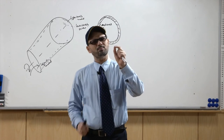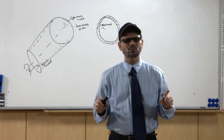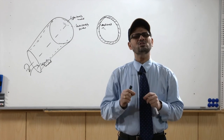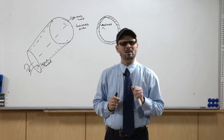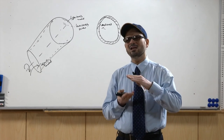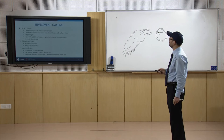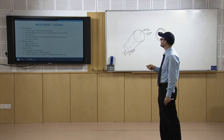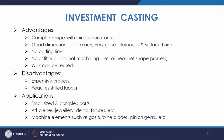The wax must provide good tensile strength, good hardness, and minimum residue — loss on ignition should be minimum and ash content should be minimum, otherwise it will stick to the inner surface. Advantages include: ability to cast complex shapes, good dimensional accuracy, close tolerance finish, no parting line, it is a near-net-shape process, and the wax can be reused. The disadvantage is that it is an expensive process requiring skilled labor; it is normally used for very small components like jewellery, dental fixtures, and turbine blades.